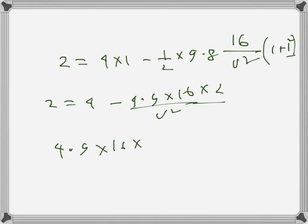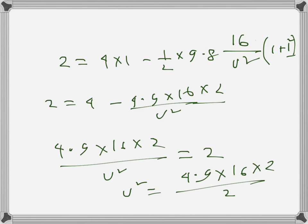It becomes u squared is equal to 4.9 times 16 times 2 over 2. So if we solve it, if we simplify it, it will become